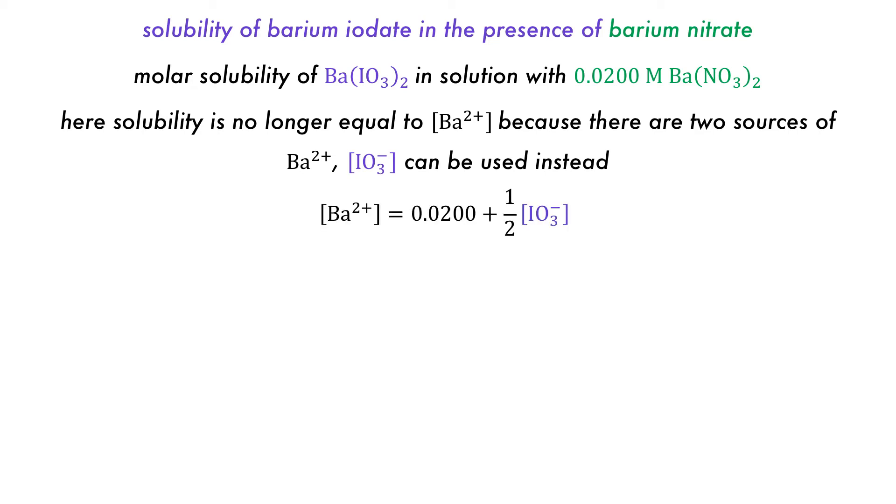Because of this, the barium cation concentration will be equal to 0.02 from the nitrate salt, plus half of the concentration of iodate anion as an indicator of the molar solubility of the iodate salt in this solution.